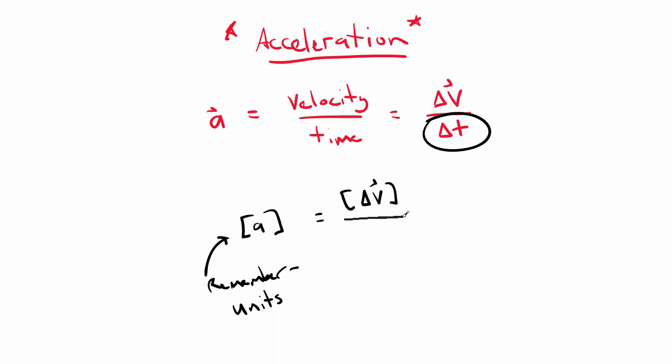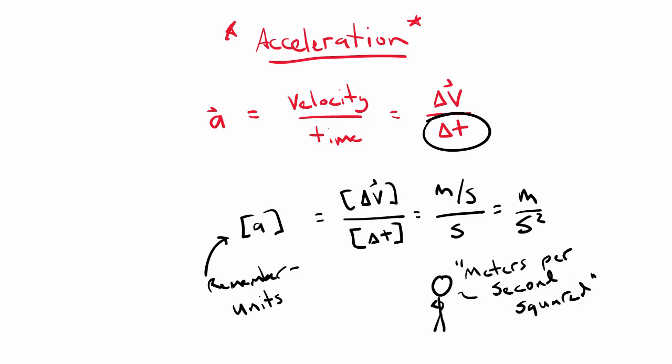We have velocity in the numerator, which has SI units meter per second, and time in the denominator, which has units of seconds. So acceleration has the units of meters per second per second, or in other words, meters per second squared.